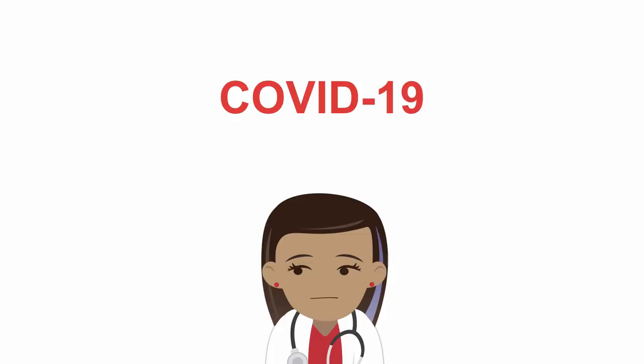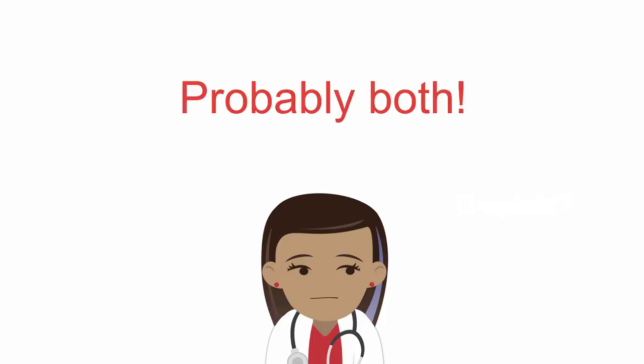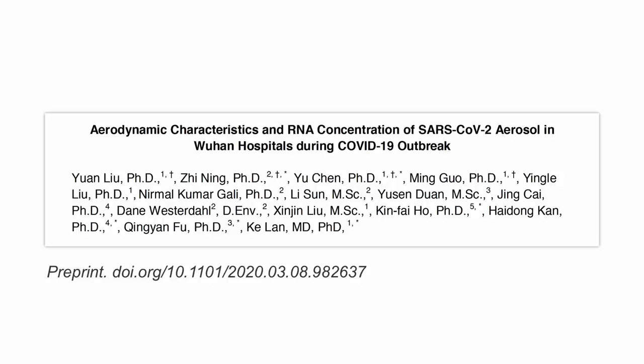What about COVID-19 and the SARS-CoV-2 virus? Is it airborne and inhaled or droplet-based via fomites and hands? The uncomfortable truth is that we have evidence for both, which is also the case for influenza. Let's have a look at this paper from Wuhan University: "Aerodynamic Characteristics and RNA Concentration of SARS-CoV-2 aerosol in Wuhan hospitals during the COVID-19 outbreak."